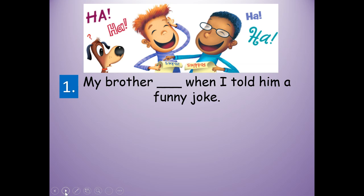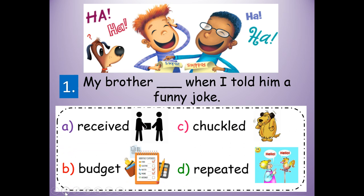Number one: my brother blank when I told him a funny joke. My brother received... my brother budget... my brother chuckled... or my brother repeated when I told him a funny joke. My brother chuckled when I told him a funny joke. Chuckled means to laugh quietly. Chuckle is the root word — C-H-U-C-K-L-E-D — and with the -ed it's in the past tense.